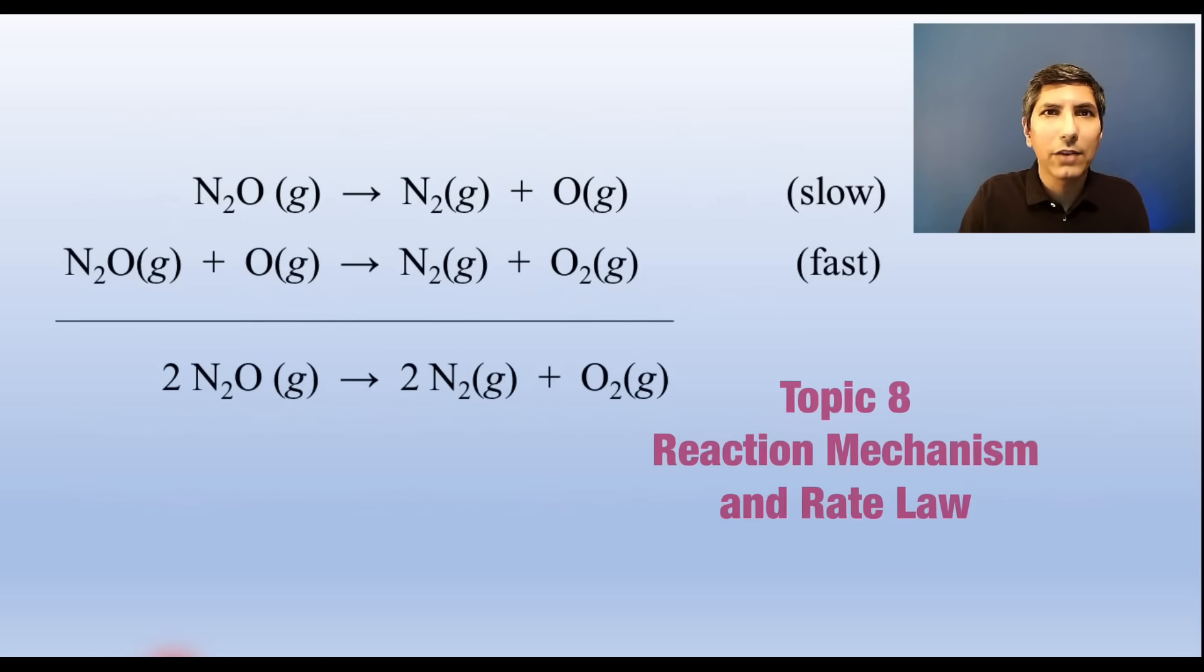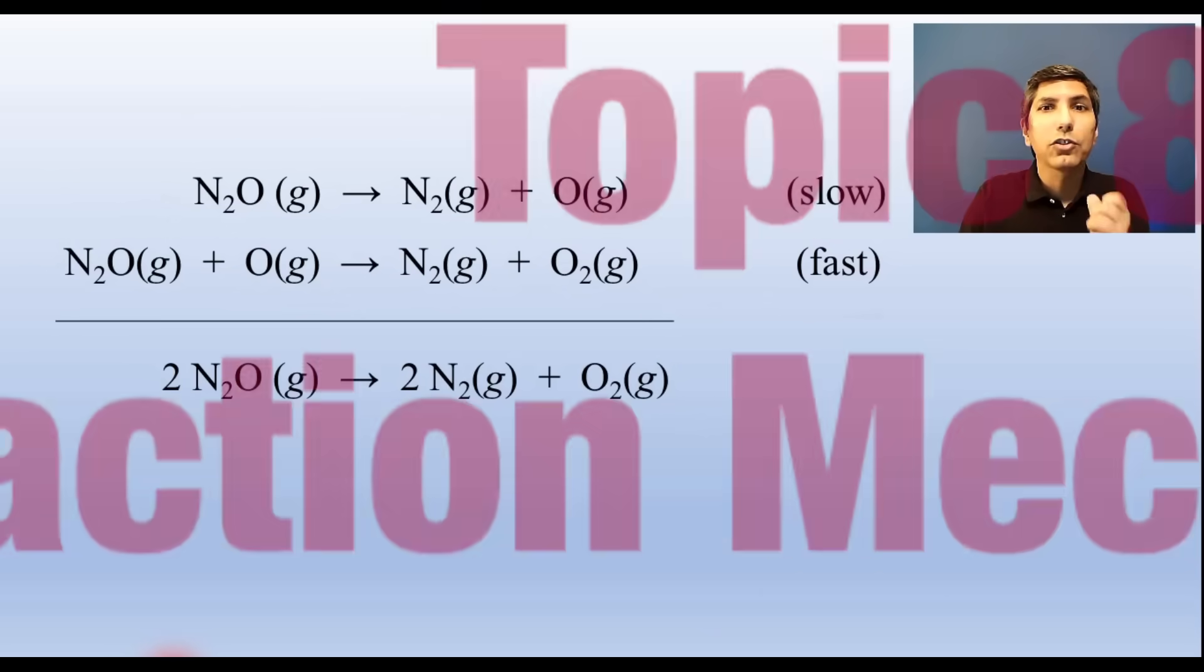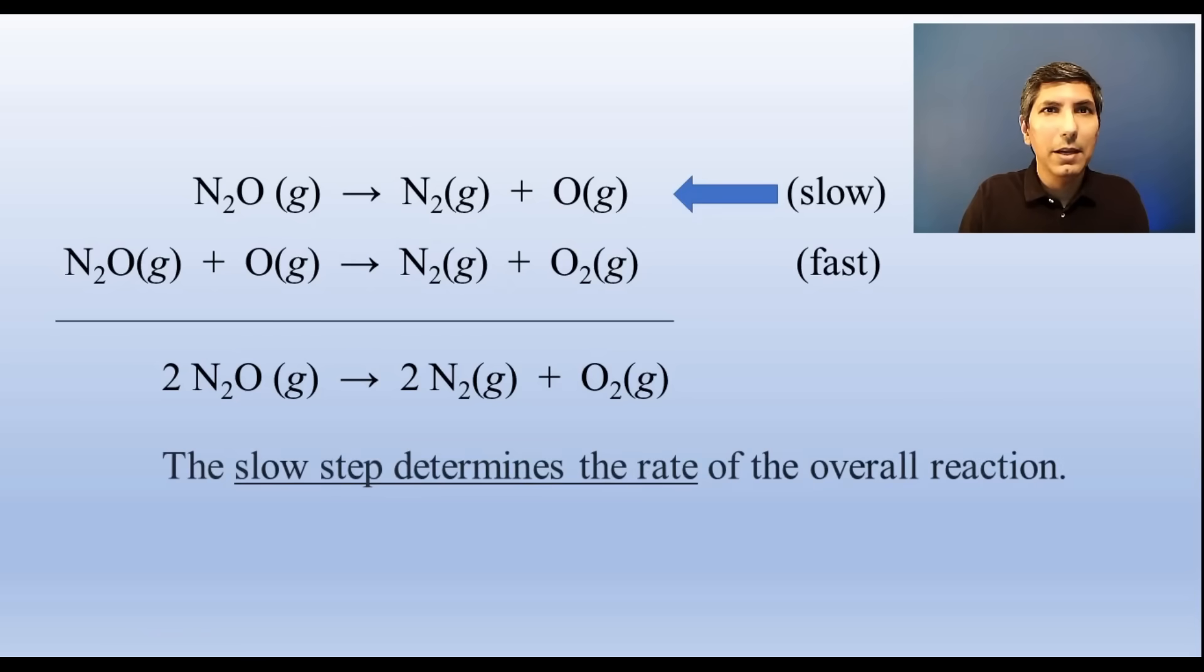Let's go back to this reaction mechanism. The rate for any reaction is determined by the slowest step in the mechanism. The rate law for that slow step is the rate law for the whole reaction. So in this case, it would be rate equals K times the concentration of N2O.